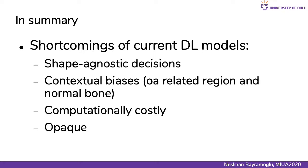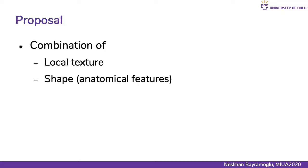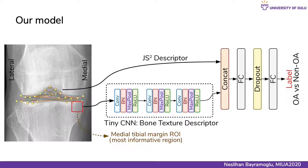In summary, current deep learning-based approaches give shape-agnostic decisions that are costly and opaque. In our study, we propose a model that combines bone shape and bone texture using a tiny CNN model to detect OA. We used a small region of interest from the medial side, allowing us to use a tiny CNN model with significantly fewer parameters compared to current architectures. In addition, we propose a compact joint shape and joint space descriptor that can be used as a marker of radiographic OA, and finally we combine these two features.